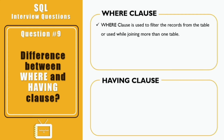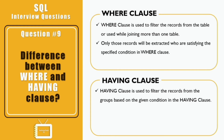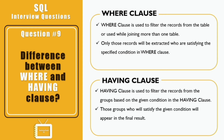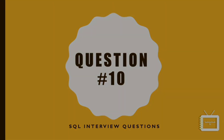Question nine: what is the difference between WHERE and HAVING? WHERE is used to filter records from a table or while joining more than one table, whereas HAVING is used to filter records from a group based on a given condition. In WHERE, only records satisfying the specified condition are extracted. In HAVING, only groups satisfying the condition appear in the final result. WHERE can be used with SELECT, UPDATE, and DELETE, but HAVING can only be used with SELECT.